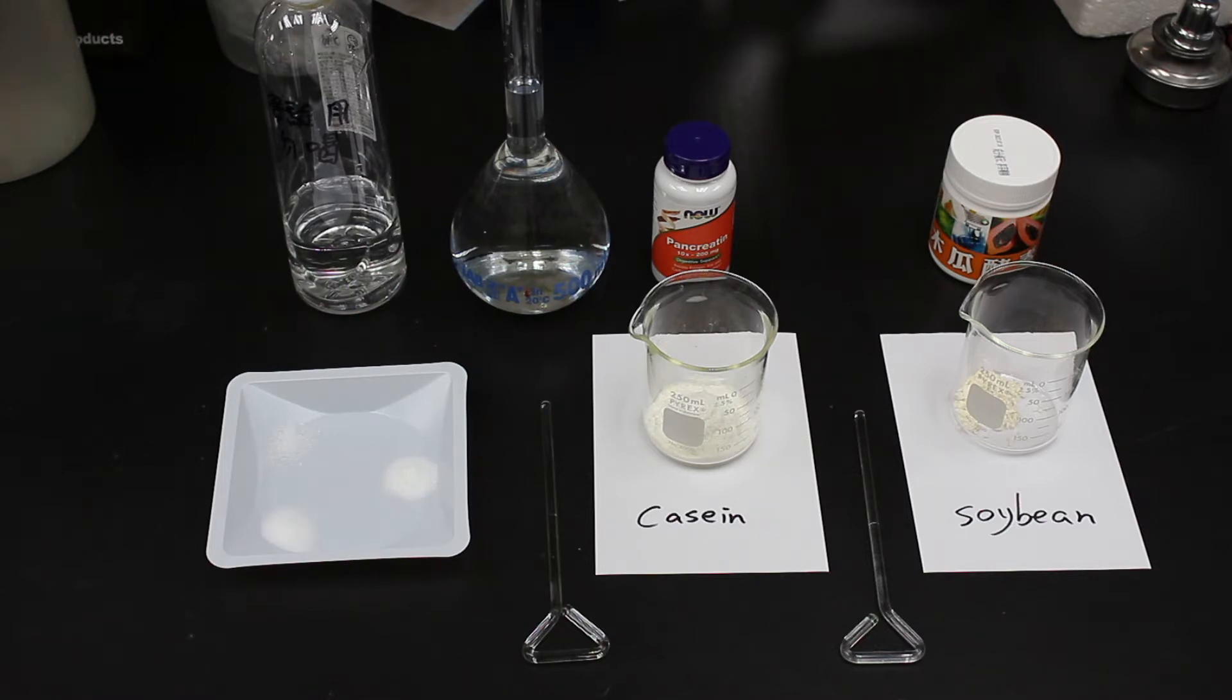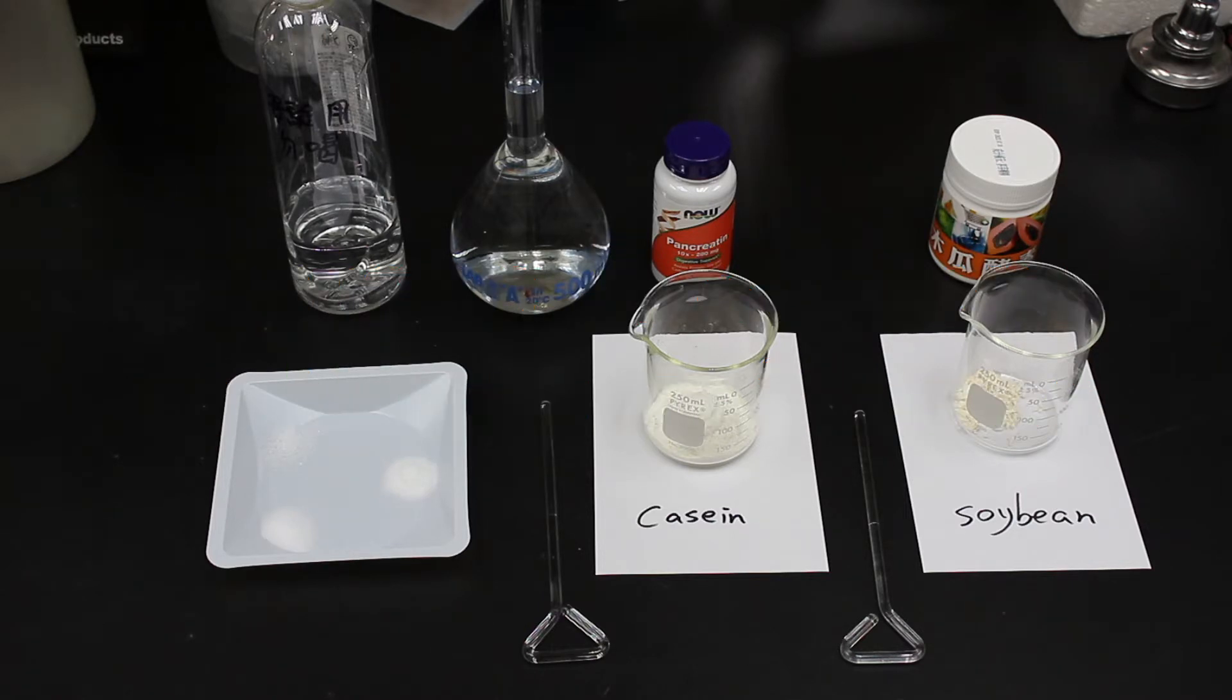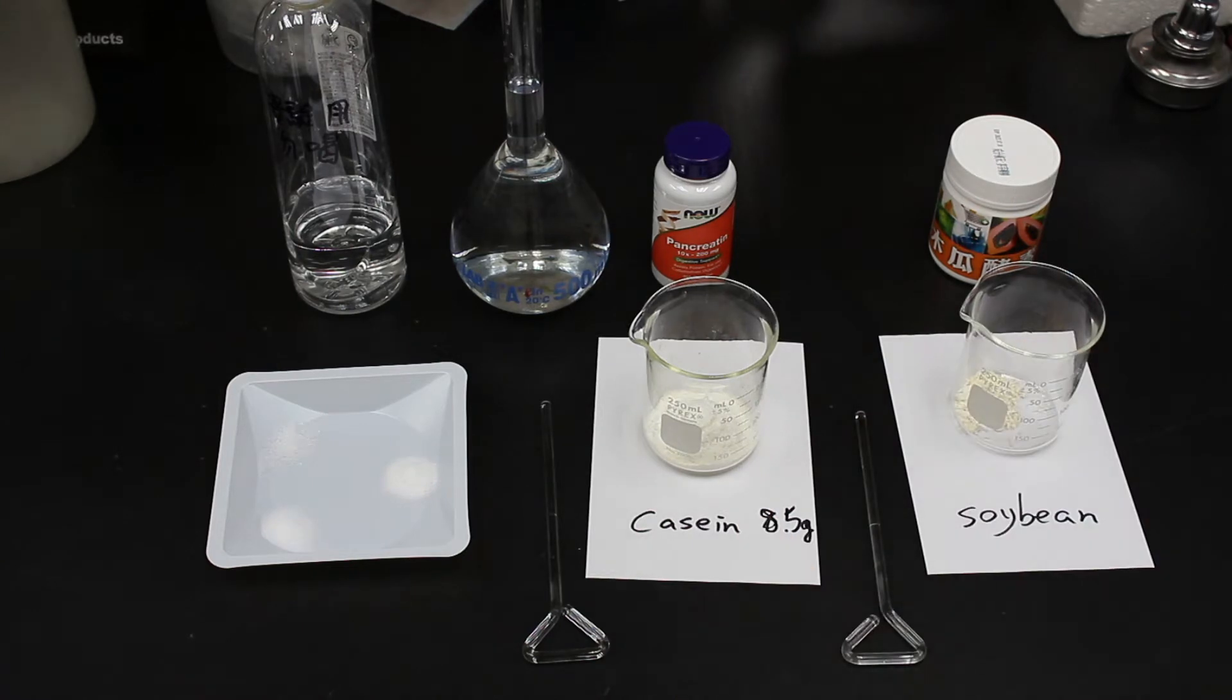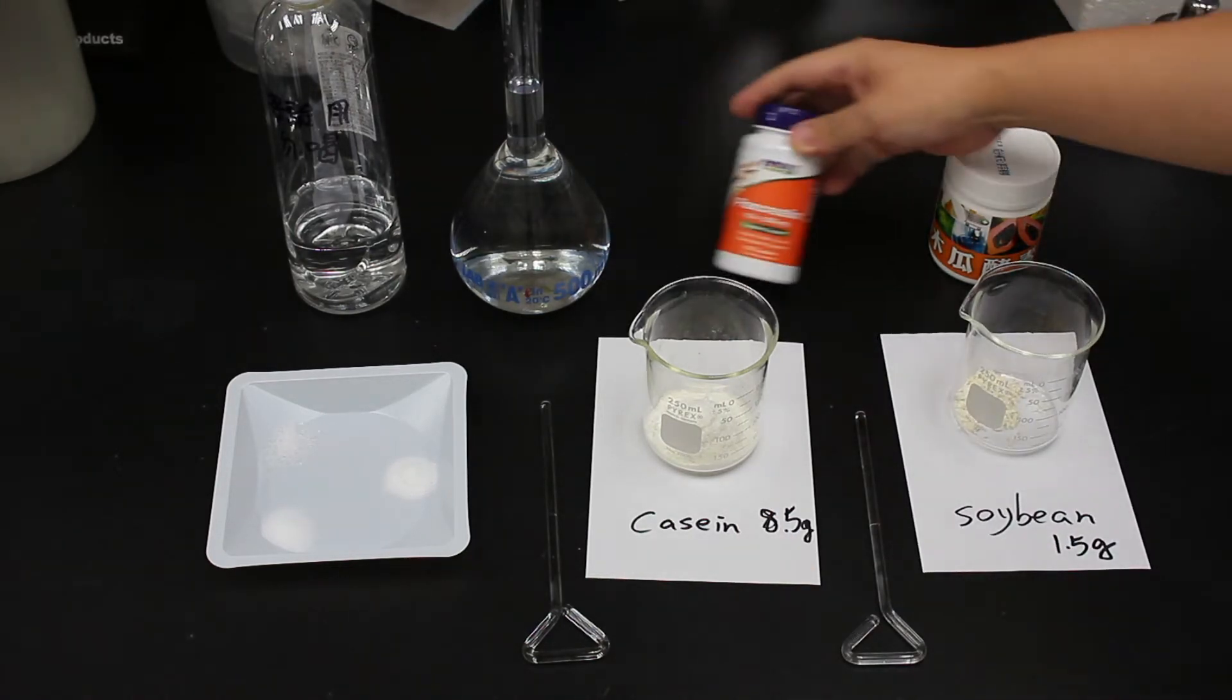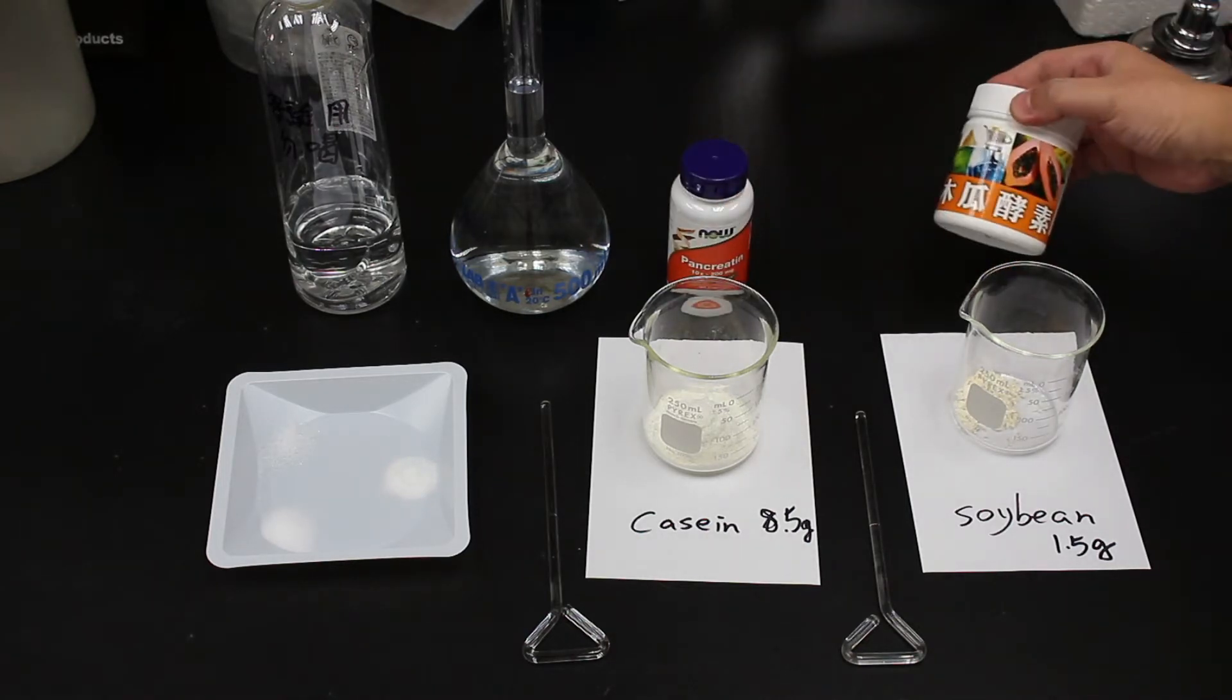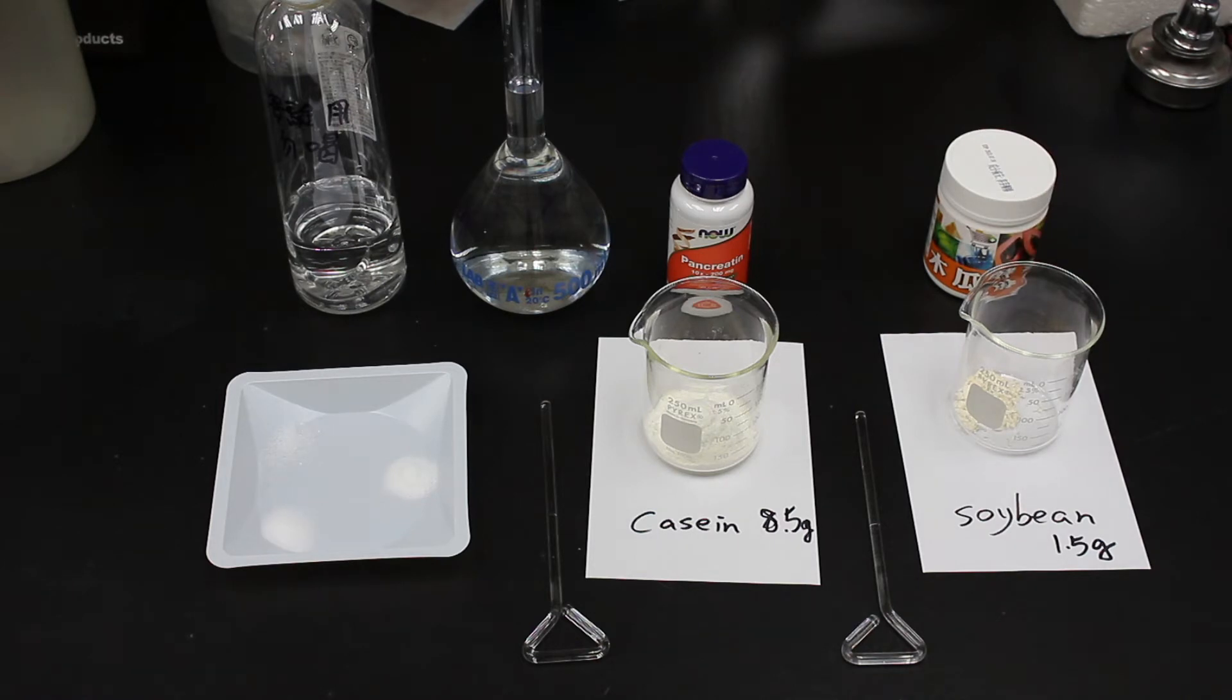This growth medium consists of tryptone and soytone as nitrogen sources, so I will make these two ingredients first. Here I have 8.5g of casein and 1.5g of soybean protein, which I will digest using pancreatin 10X and papaya enzyme into tryptone and soytone.